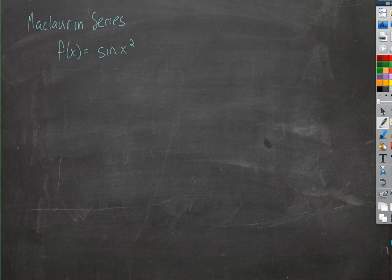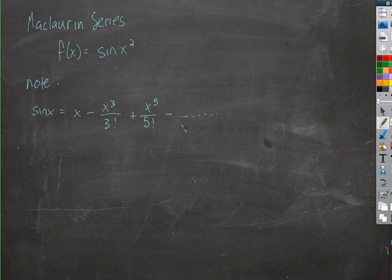So first, note that the Maclaurin expansion for sine of x is this guy here. And the next term would be minus x to the 7th over 7 factorial, and keep on going with odd powers and odd factorials.